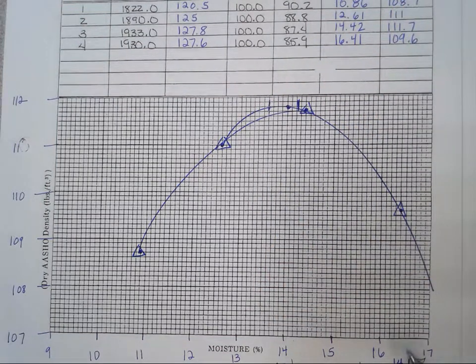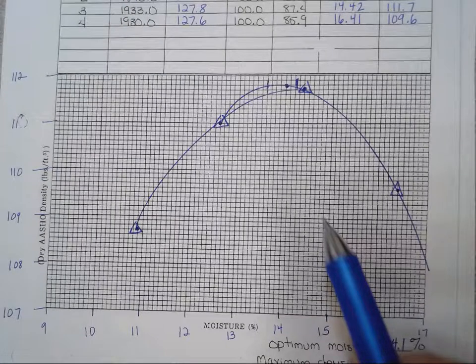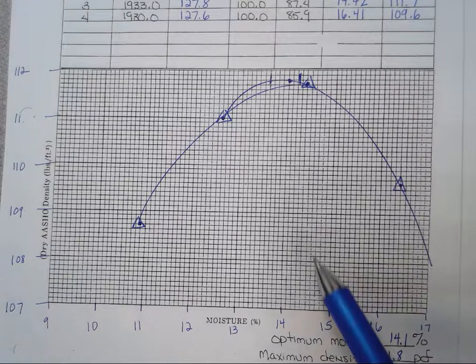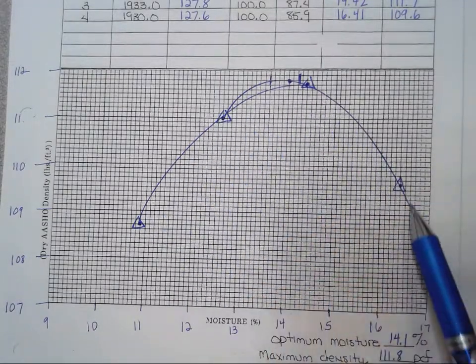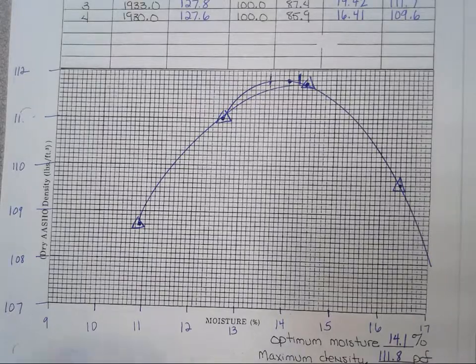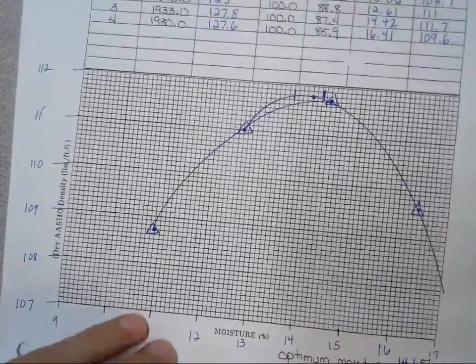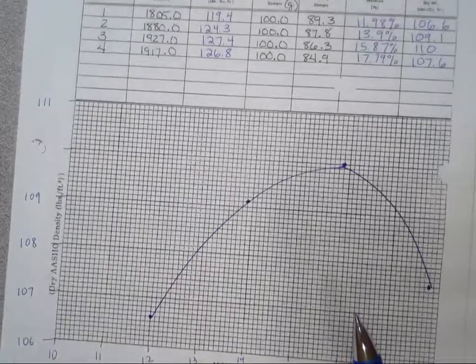And then your maximum dry density, we just take that straight across. Okay. 11.8 for that. But you need to be, you need your density to be up in that range to make that kind of curve there. Okay. So that's the first one, for our second one, which is BS4 here.